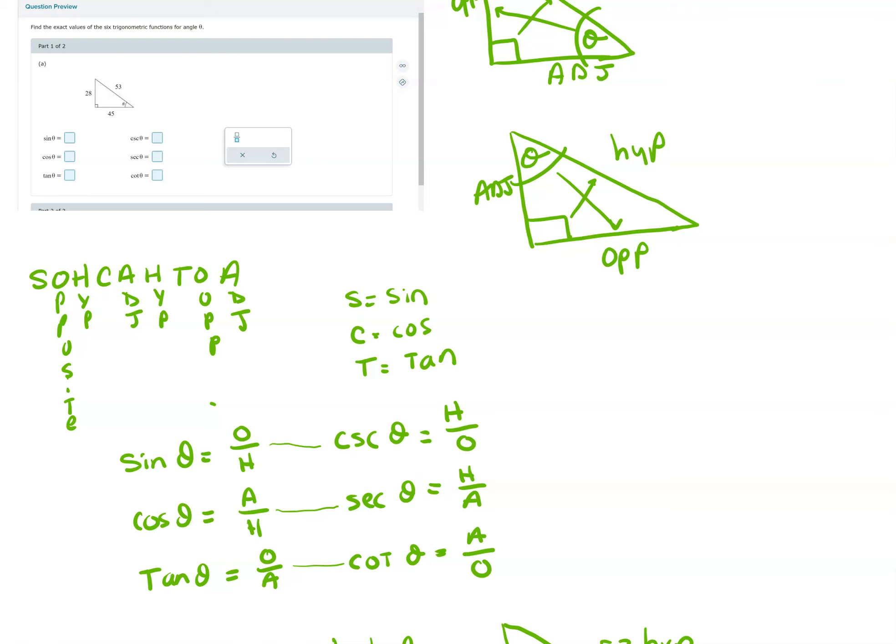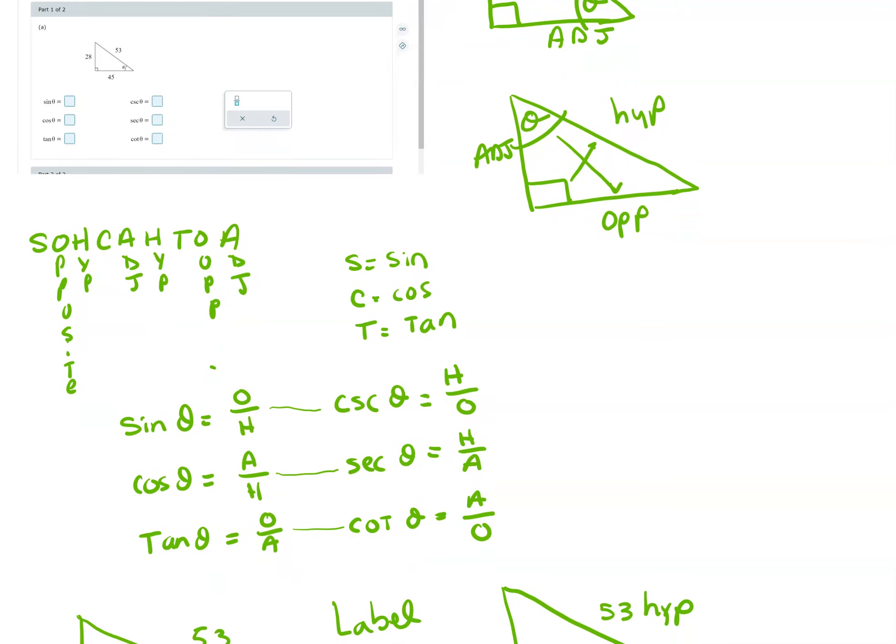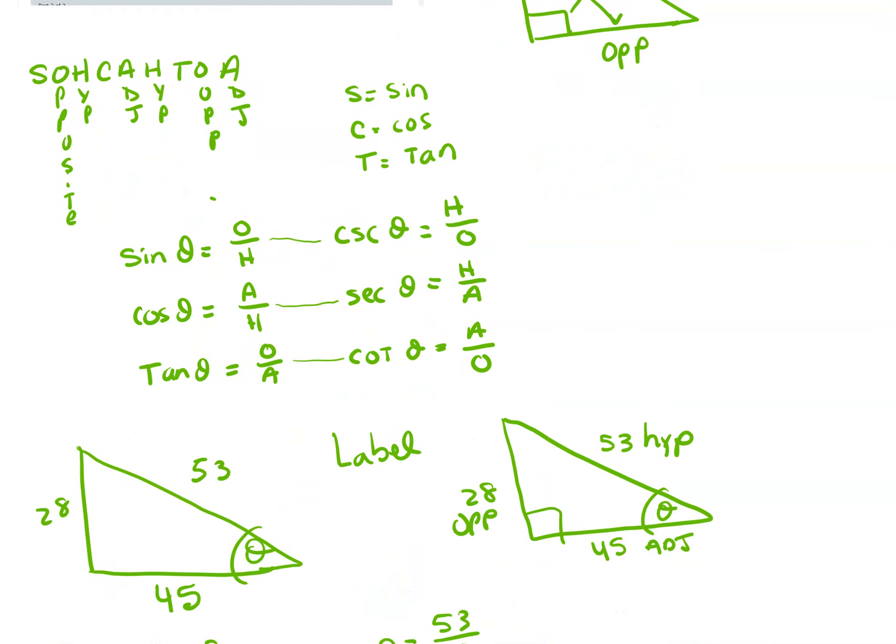Don't get this confused because these start with C's. Cosecant does not line up with cosine, it lines up with sine. And you just flip the sides. So instead of opposite over hypotenuse, it's hypotenuse over opposite, hypotenuse over adjacent, adjacent over opposite. So now let's look at the given example.